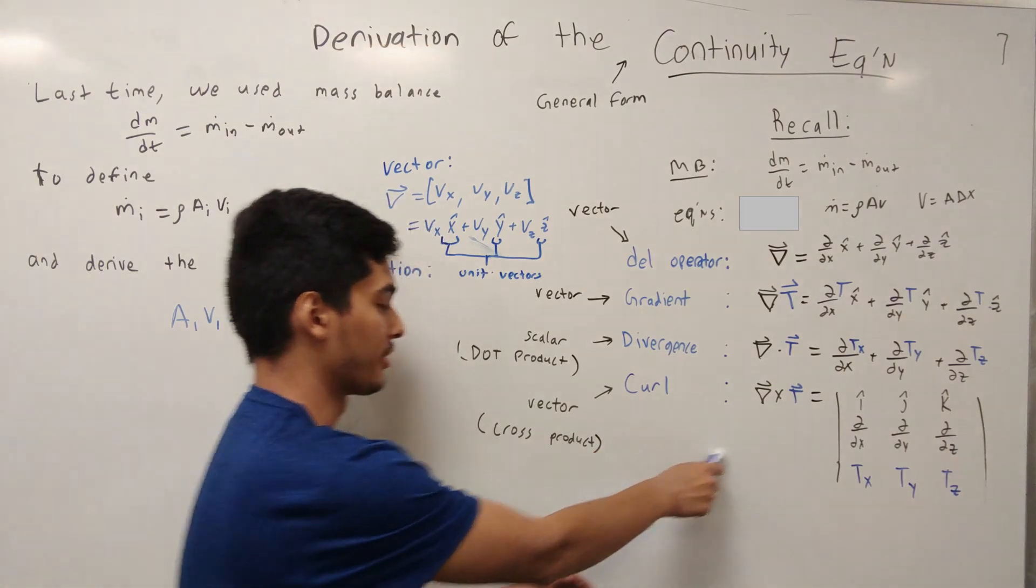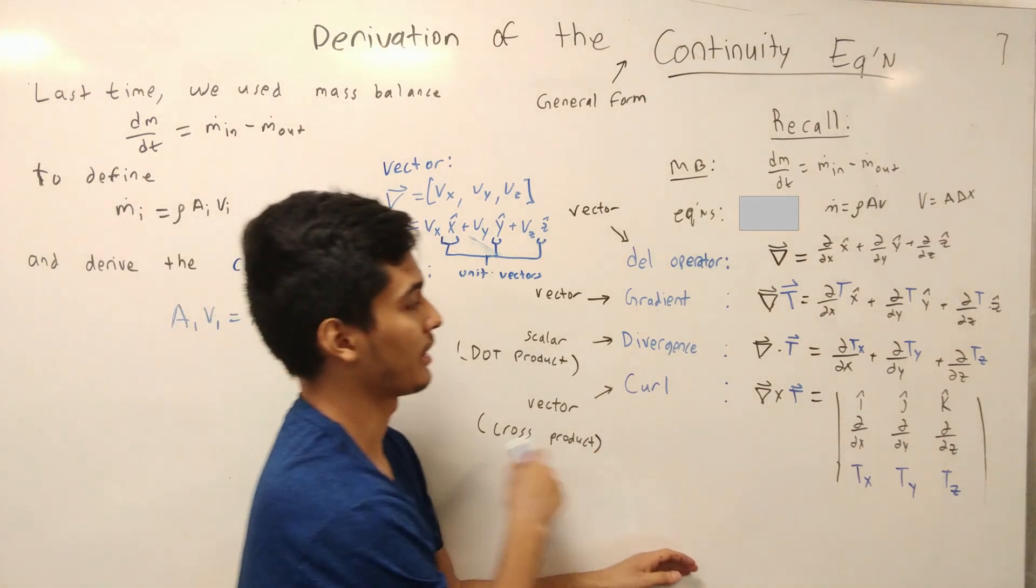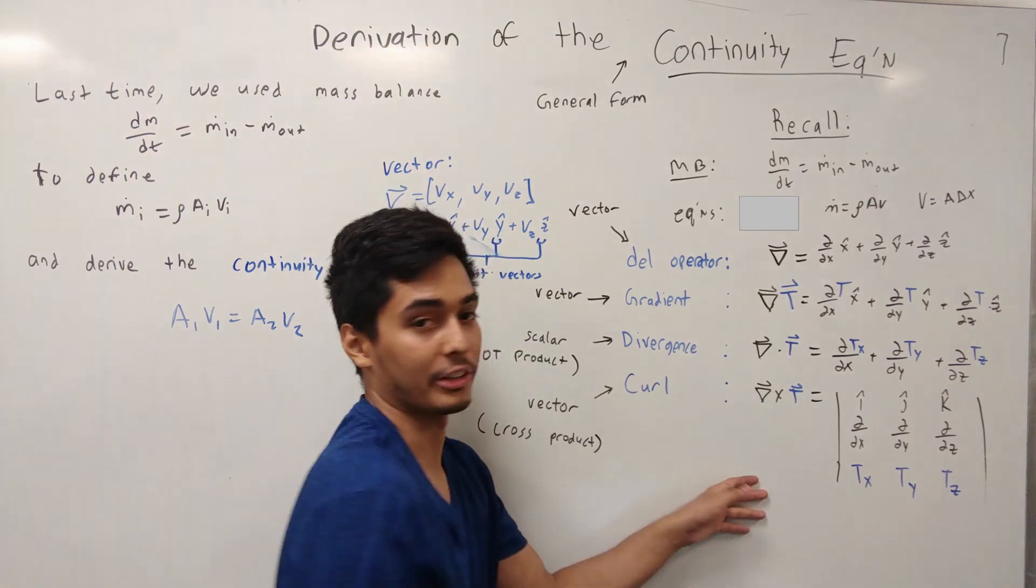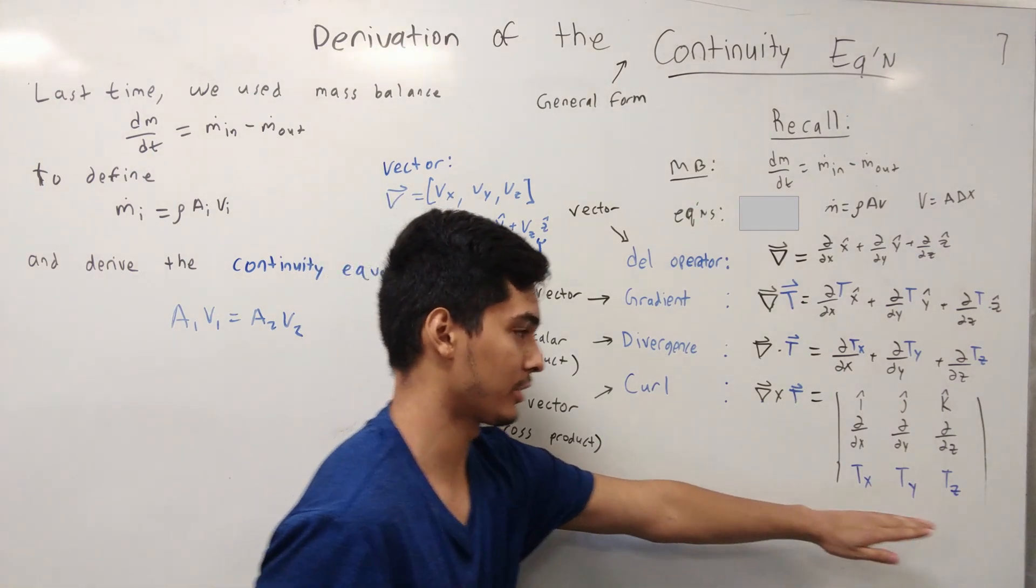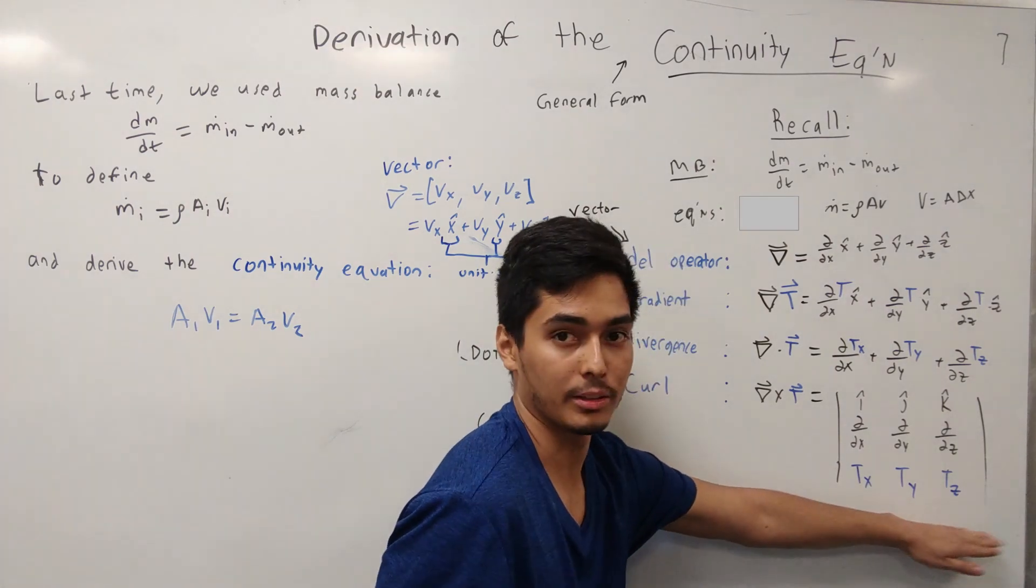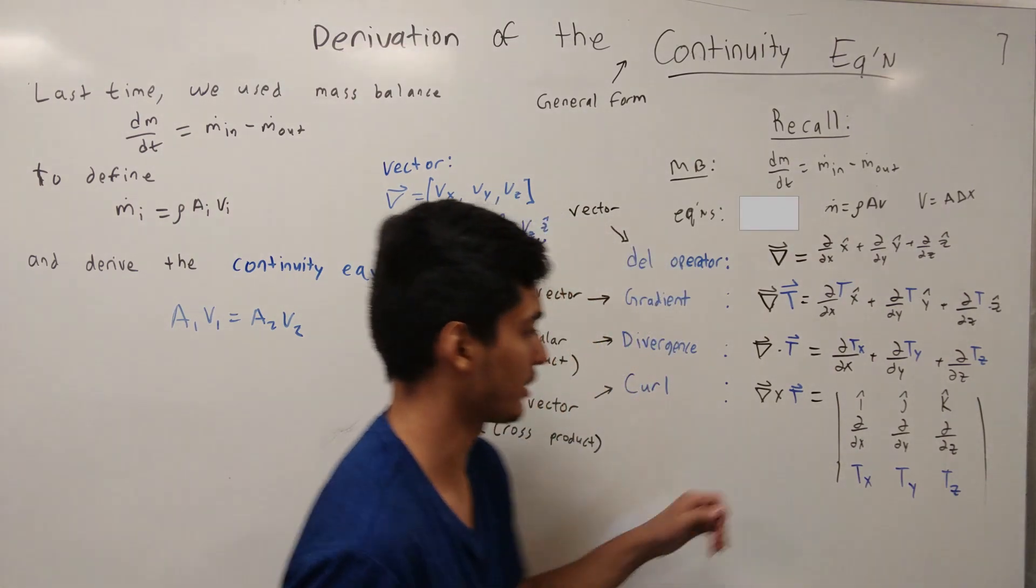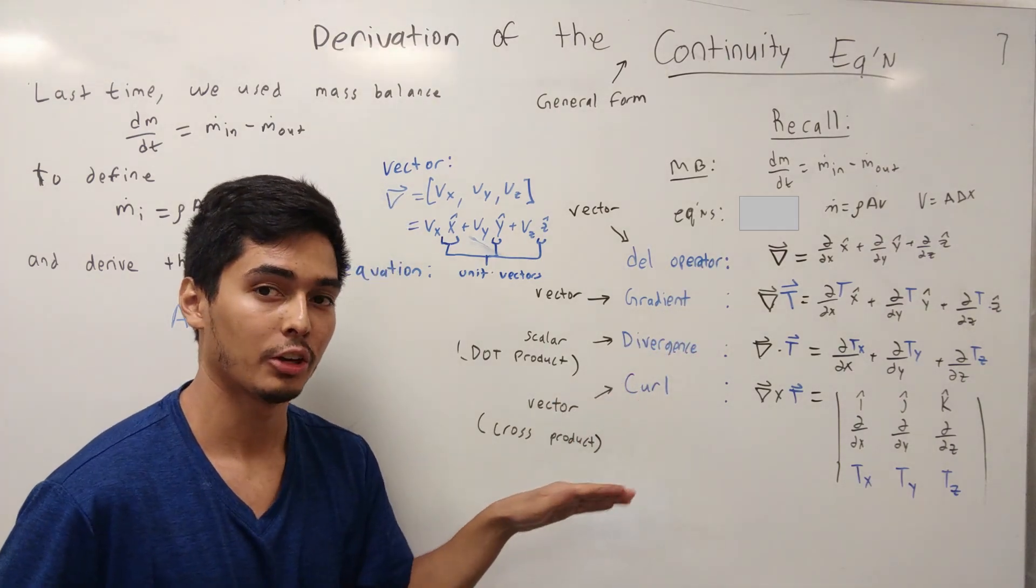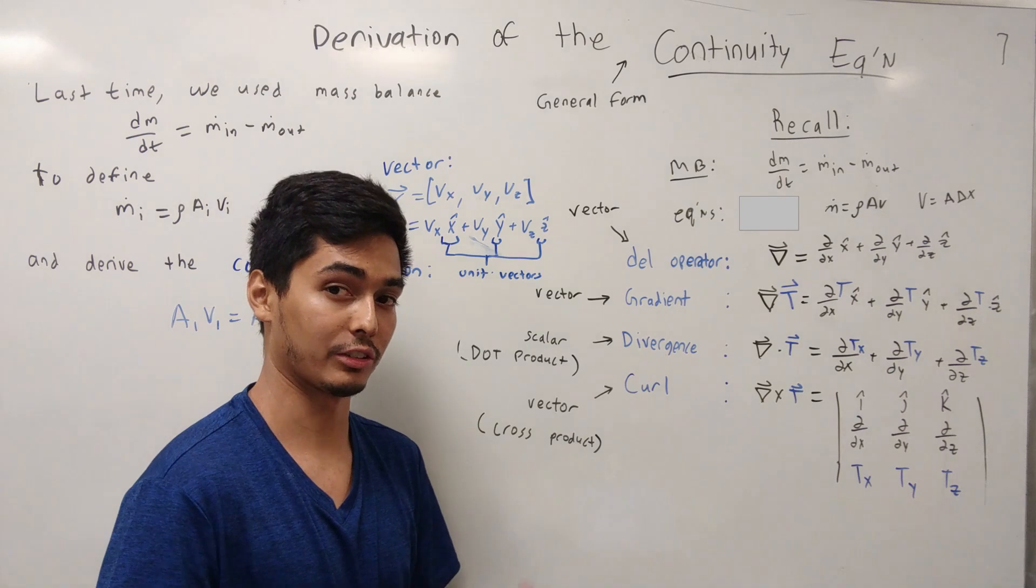And lastly, the curl. Now, the curl is you're taking the cross product. So, you're crossing the del operator with some other vector. And to take the cross product, remember these guys? You've taken multivariable or linear algebra, multivariable calculus. So, using these definitions of the del operator, gradient, divergence, curl, we can use them to define other things, such as flux.